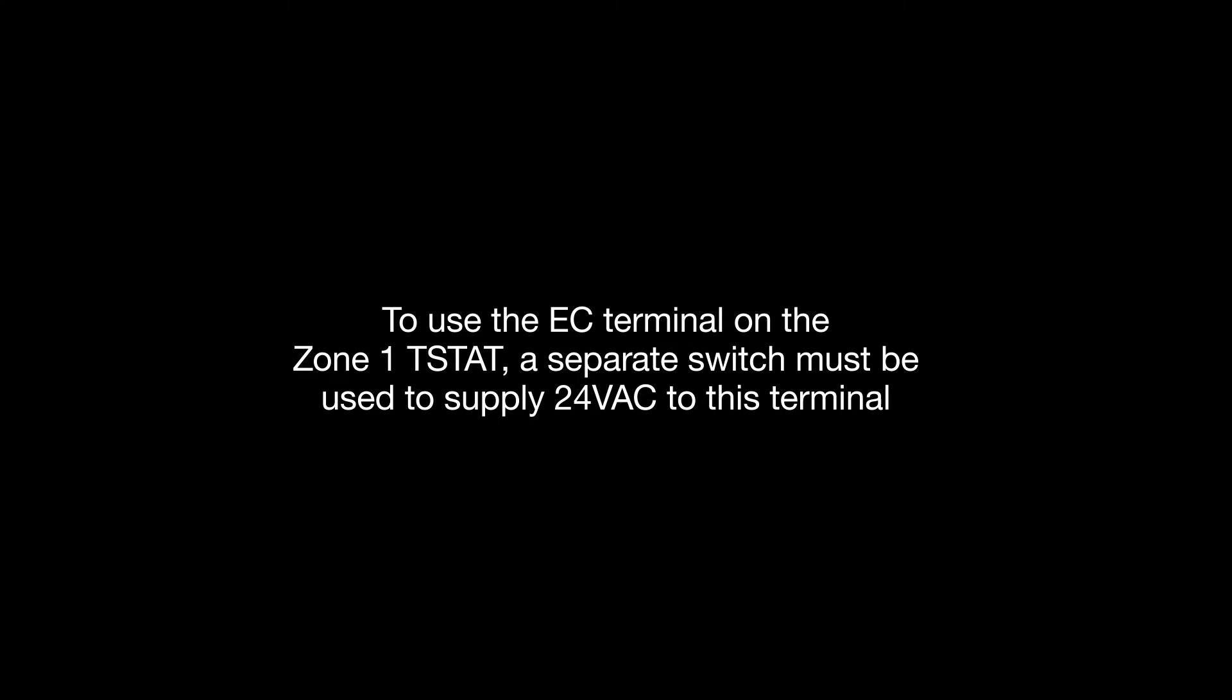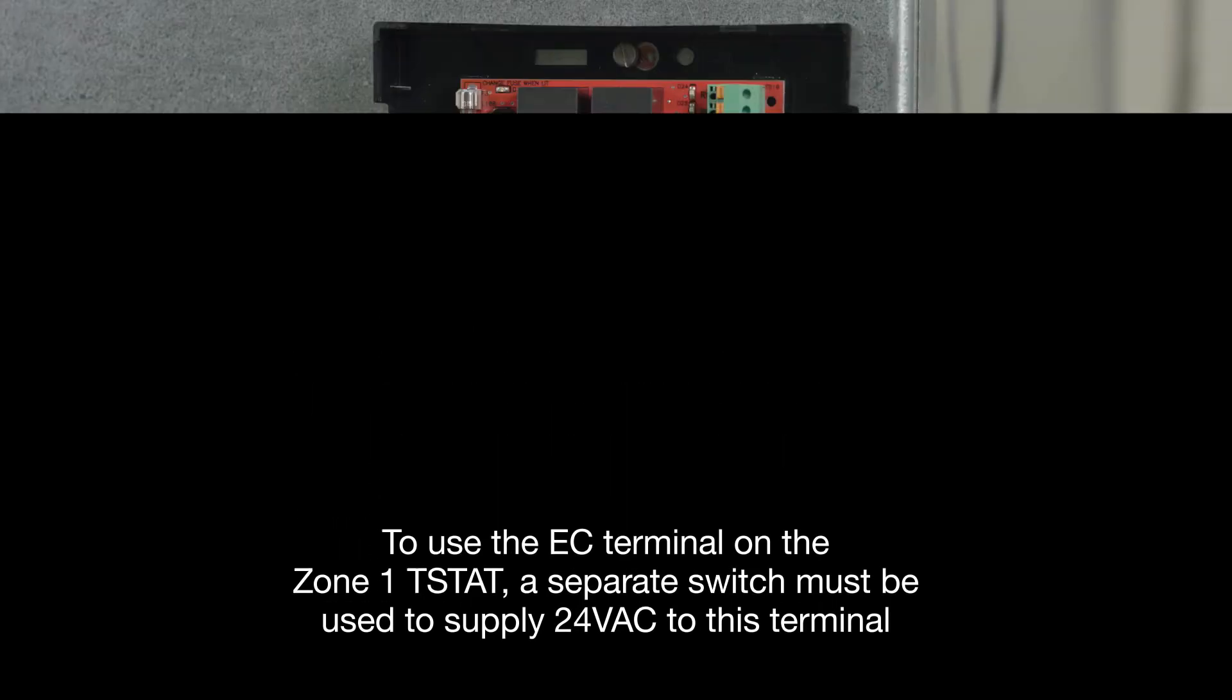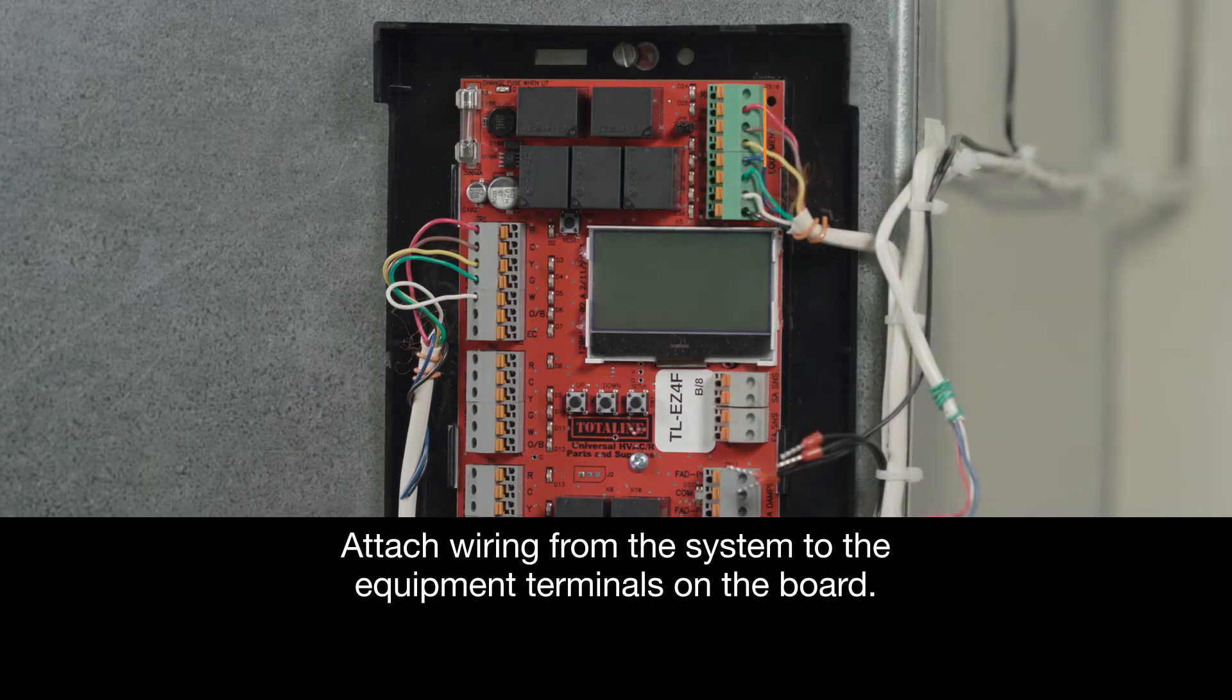To use the EC terminal on the Zone 1 T-STAT, a separate switch must be used to supply 24V AC to this terminal. Next, attach wiring from the system to the equipment terminals on the board.